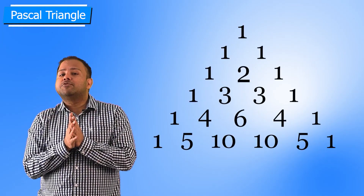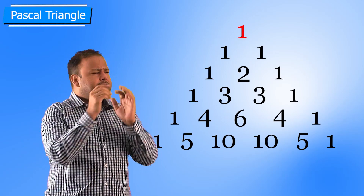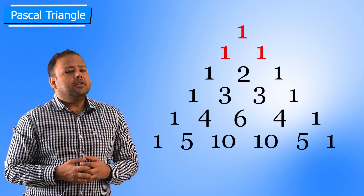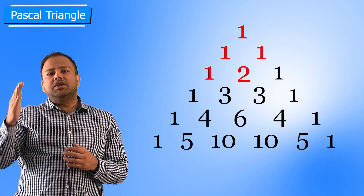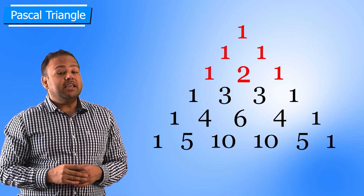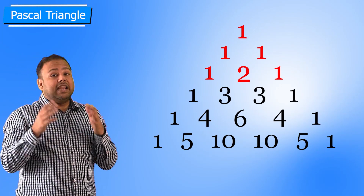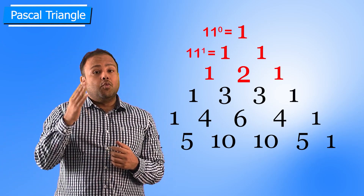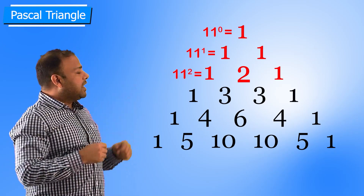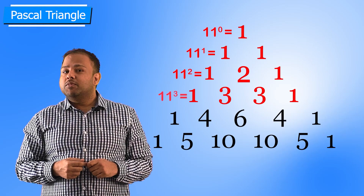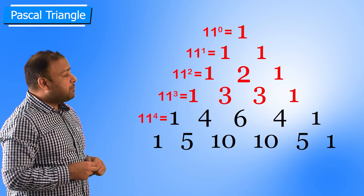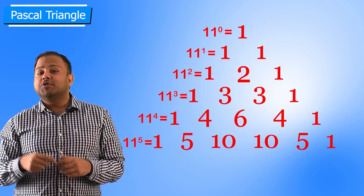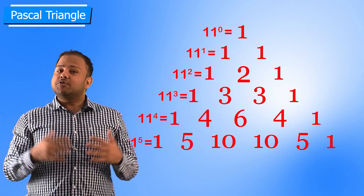Another interesting fact: look at the first row — that is 1. The second row, written side by side, gives 11. The next row, 1,2,1 side by side, gives 121, which is 11 squared. The first number is 11^0, the second is 11^1, the third is 121 which is 11², the fourth row 1,3,3,1 gives 11³. The next is 11⁴, which is 14641 — that is 1,4,6,4,1. Now you know 11⁵, 11⁶, and 11⁷.